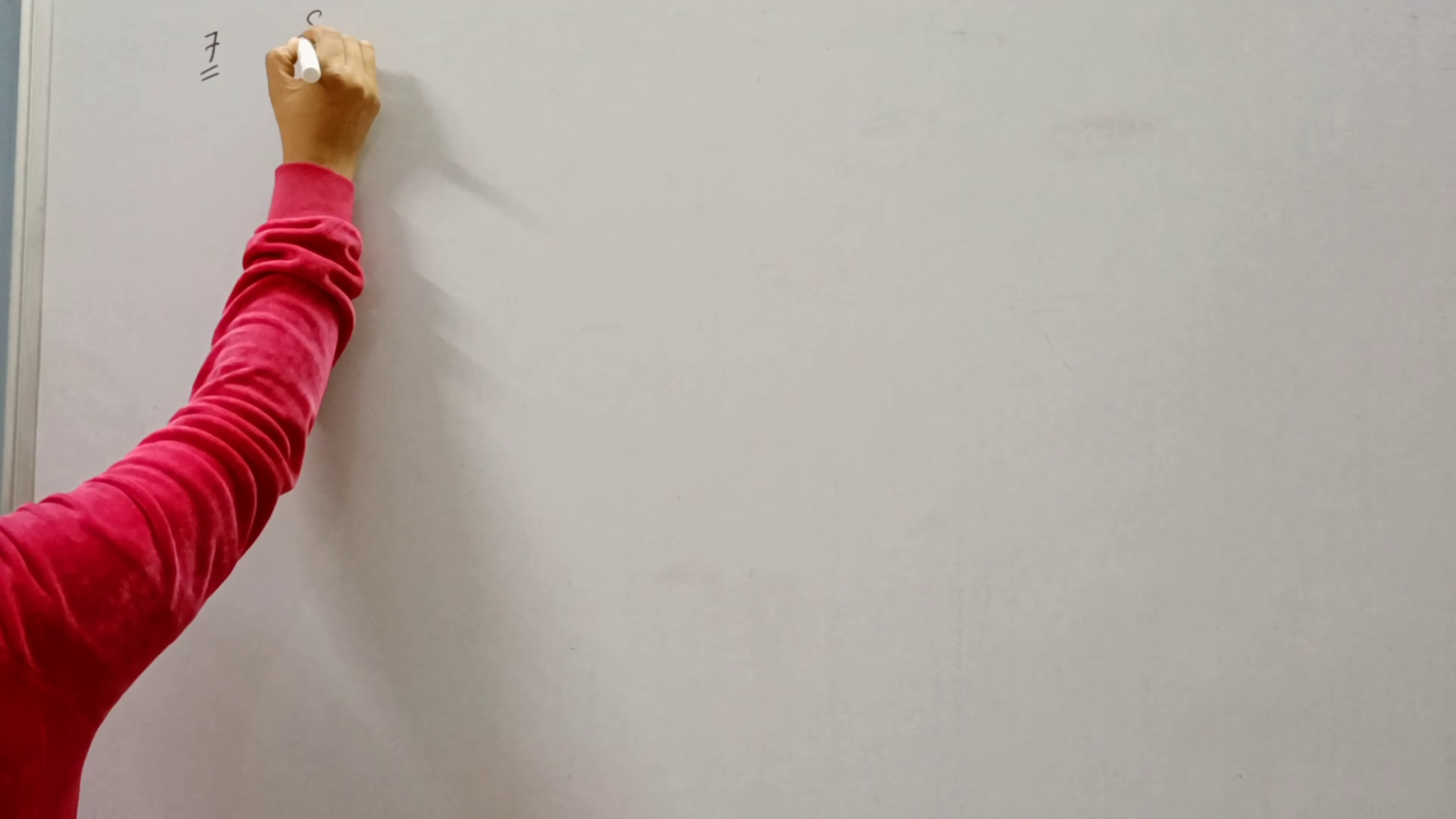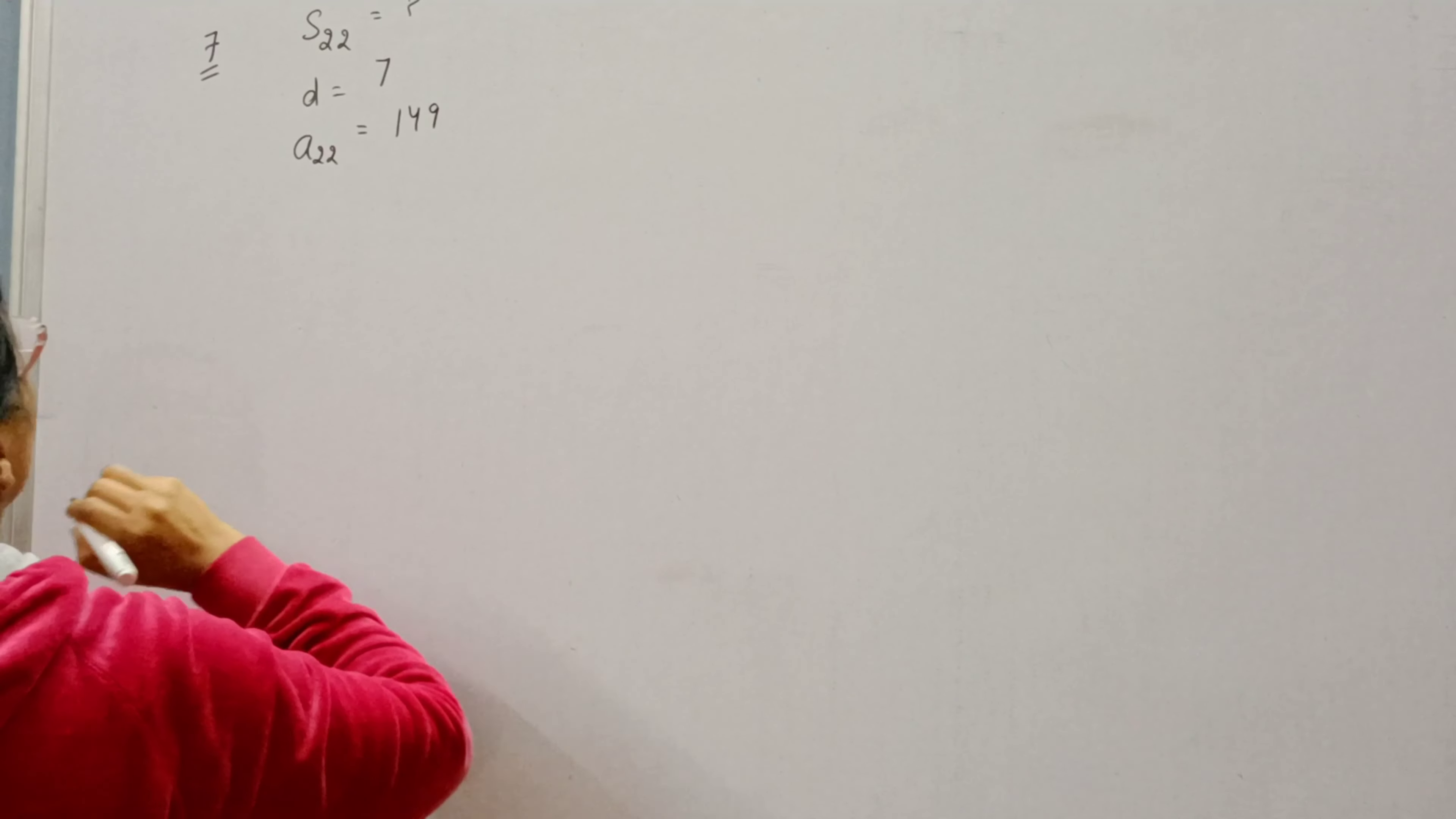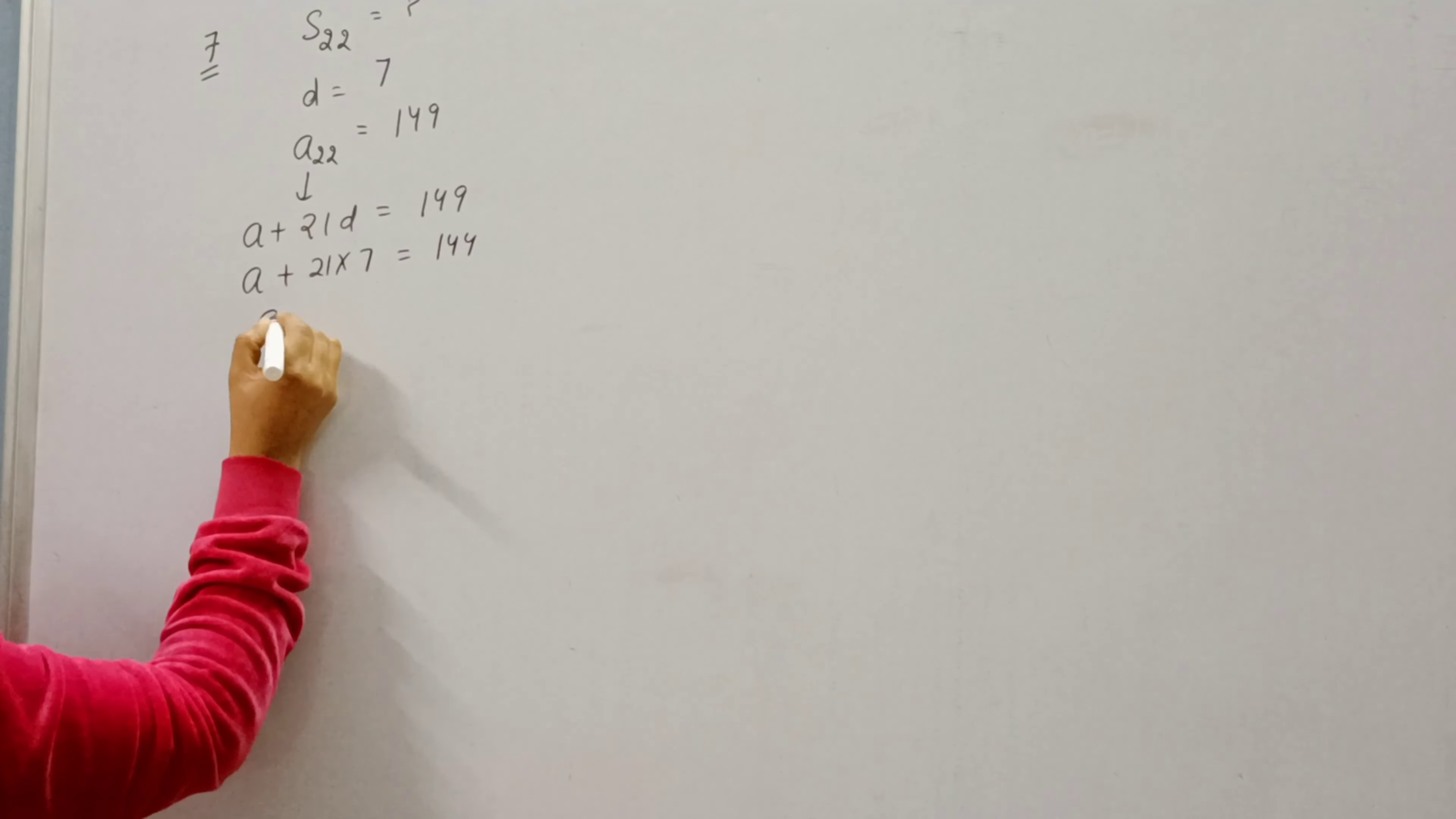Question number 7 is: Find the sum of first 22 terms of an AP in which D is 7 and 22nd term is 149. Now, the 22nd term is given, so we can write it as A plus 21D. A is not known to us but D is given, so first of all we will find A.